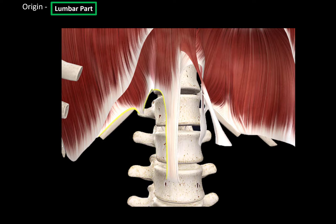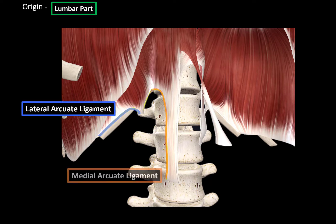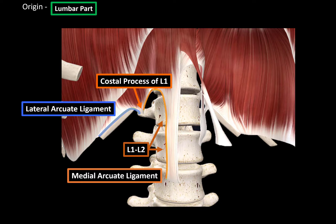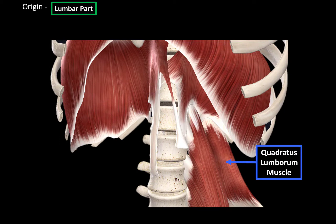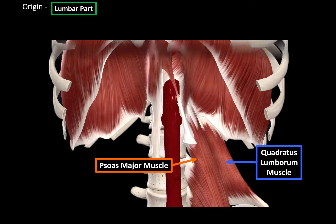Another thing you will find in the lumbar region are certain ligaments that provide extra attachment points for the diaphragm: the lateral arcuate ligament and the medial arcuate ligament. The medial arcuate ligament attaches from the bodies of around L1–L2 to the costal process of L1. The lateral arcuate ligament goes from the costal process of L1 to the twelfth rib. The median arcuate ligament forms a border between the right and the left crura. Underneath the lateral arcuate ligament you'll find the quadratus lumborum muscle, and under the medial arcuate ligament you'll find the psoas major muscle. Underneath the median arcuate ligament runs the aorta.